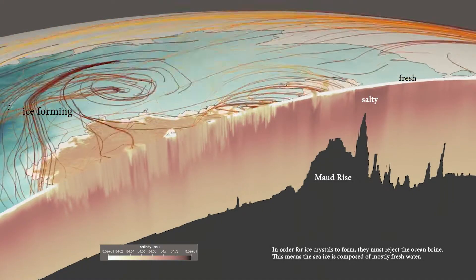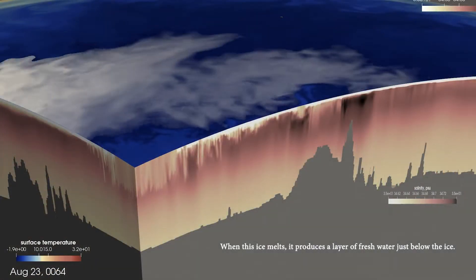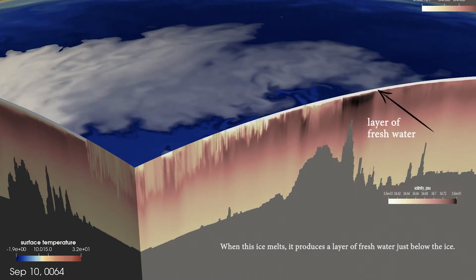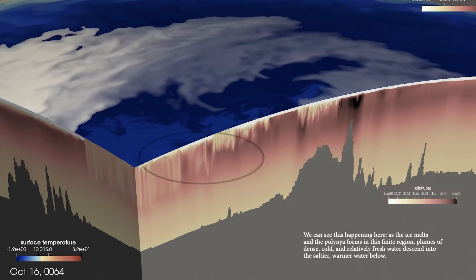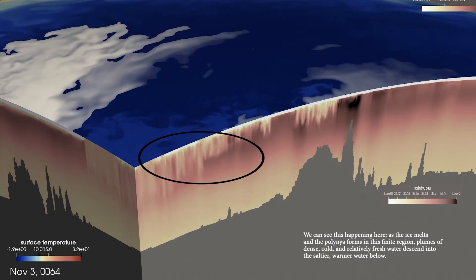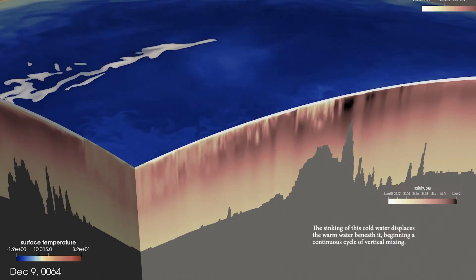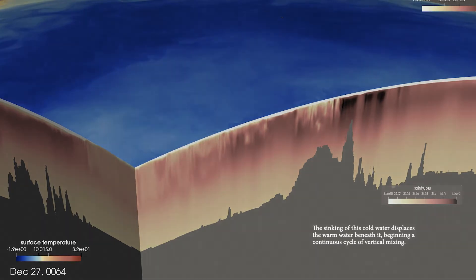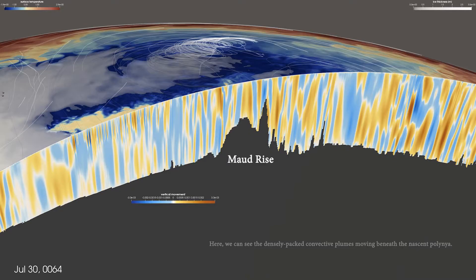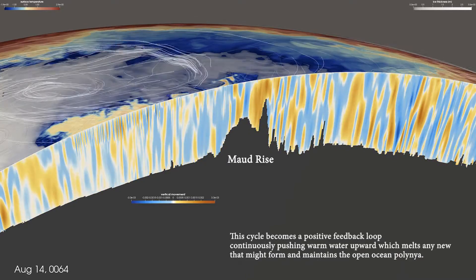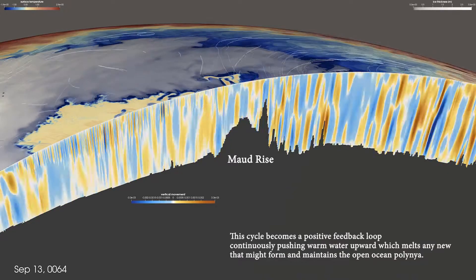In order for ice crystals to form, they must reject the ocean brine. This means the sea ice is composed of mostly fresh water. When the ice melts, it produces a layer of fresh water just below the ice. As the ice melts and the polinia forms in this finite region, plumes of dense, cold, and relatively fresh water descend into the saltier, warmer water below. The sinking of this cold water displaces the warm water beneath it, beginning a continuous cycle of vertical mixing. We can see the densely packed convective plumes moving beneath the nascent polinia. This cycle becomes a positive feedback loop, continuously pushing warm water upward, which melts any new sea ice that might form and maintains the open-ocean polinia over the course of the season.